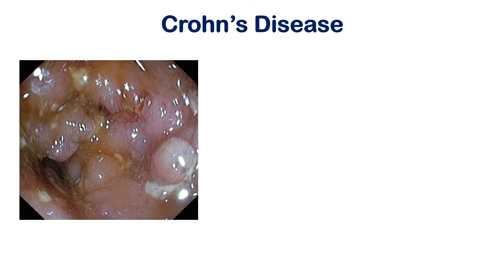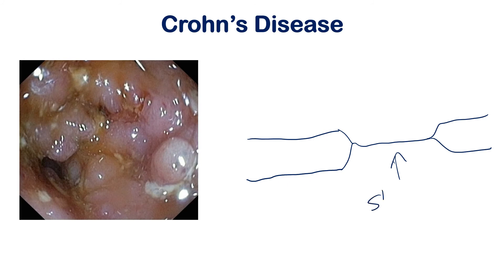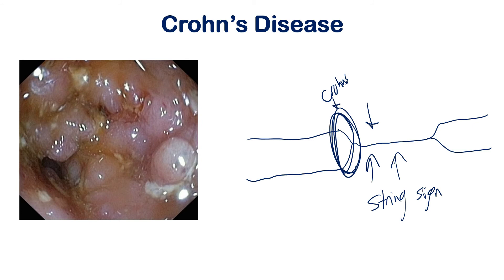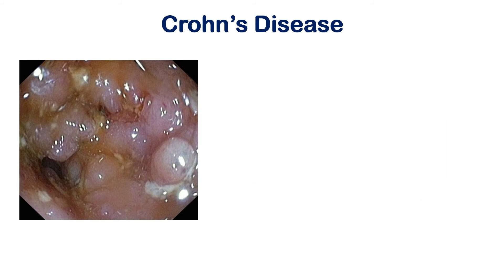On an X-ray, a stricture from Crohn's disease is called a string sign. You'll see normal bowel, then all of a sudden it becomes as thin as a string, then returns to normal bowel again. Nothing can get through the strictured area because Crohn's transmural inflammation has gone through all four layers on both sides. You would also see dilation on the proximal side on X-ray.